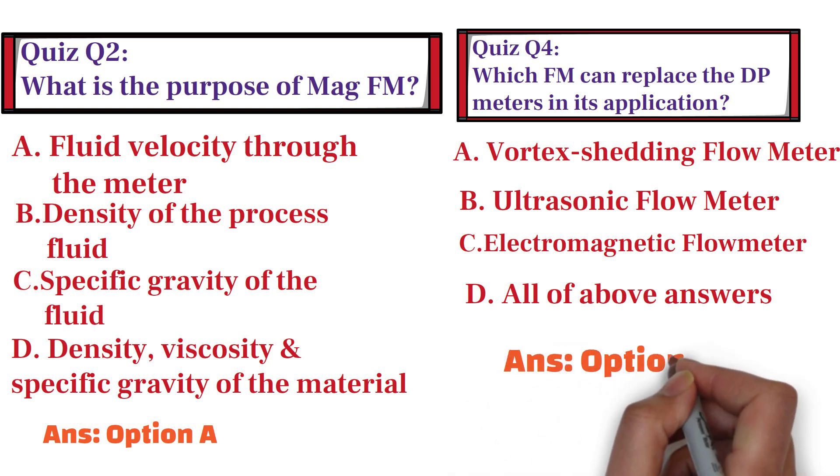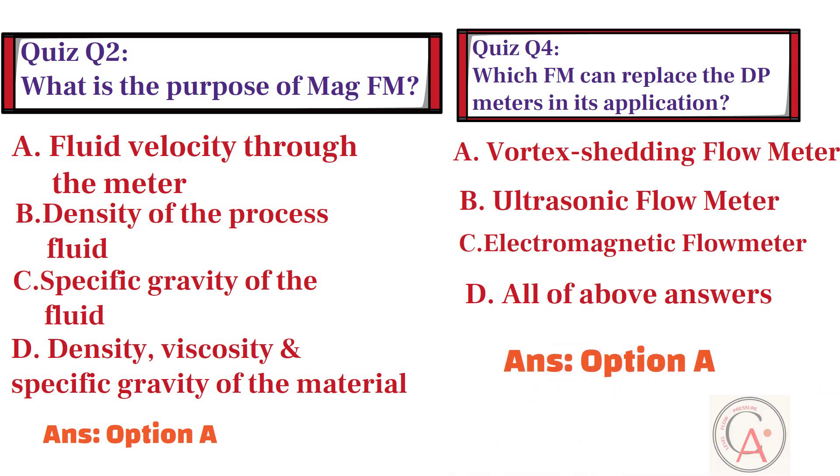The correct answer is option A — the vortex shedding flow meter can replace the differential pressure meters in its application.